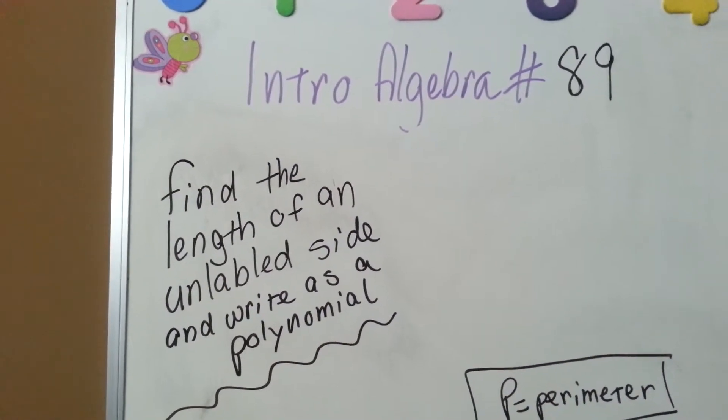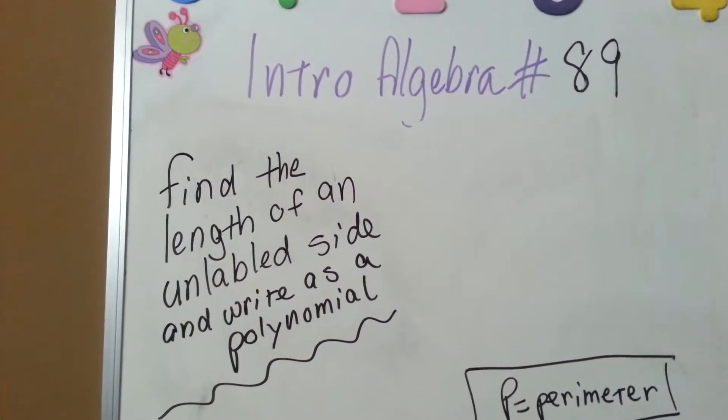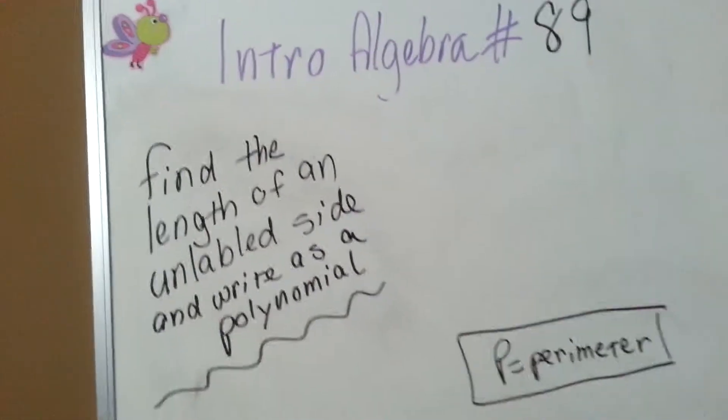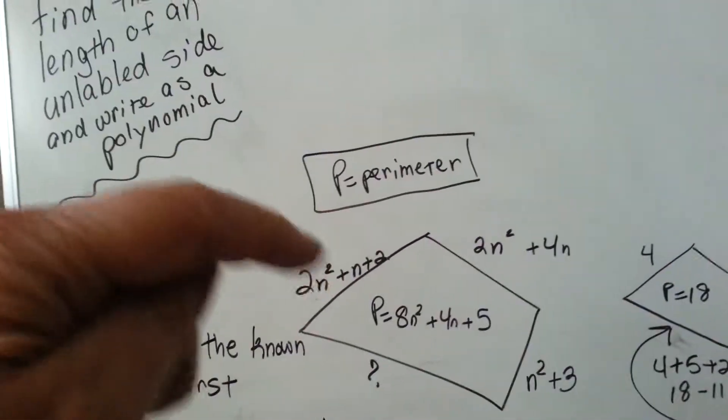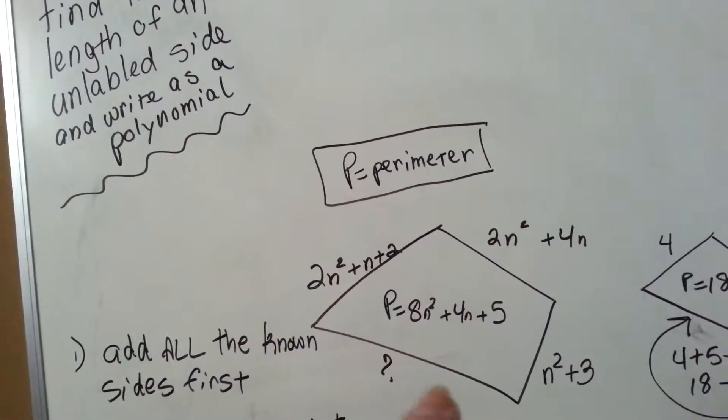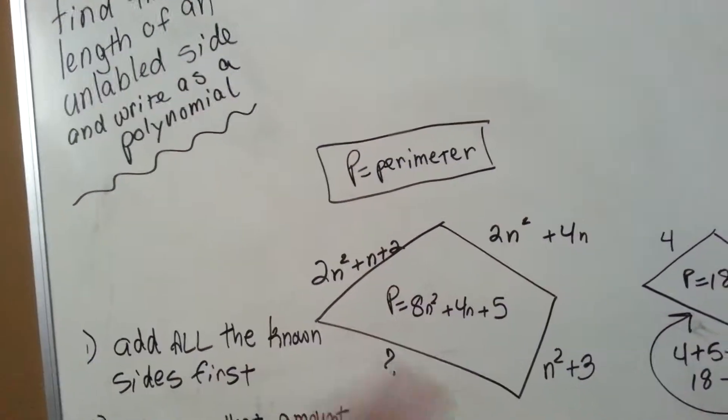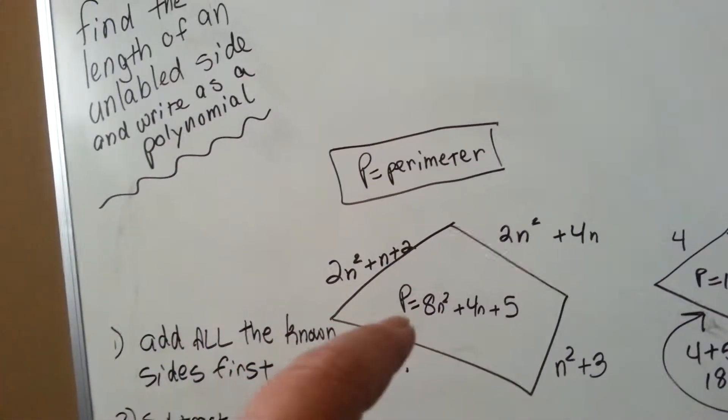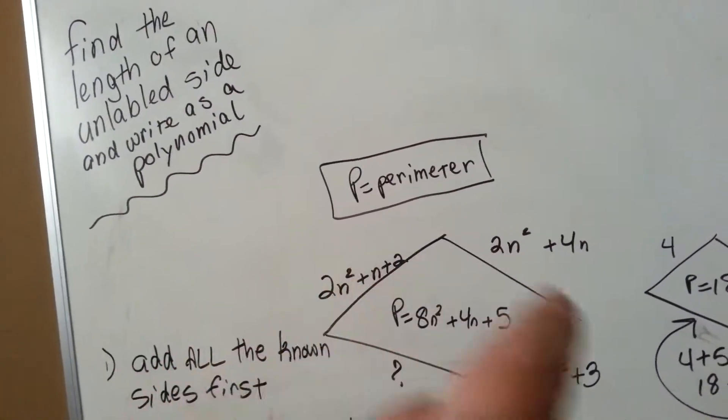The length of an unlabeled side and write it as a polynomial. So let's say you're given this figure and told you need to find this unlabeled side and you need to write it as a polynomial. What would you do? Well, p equals perimeter. That's the entire outside.